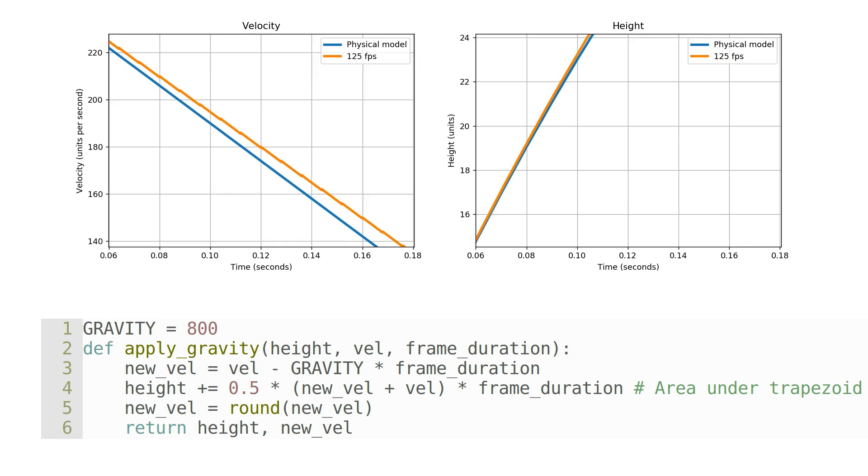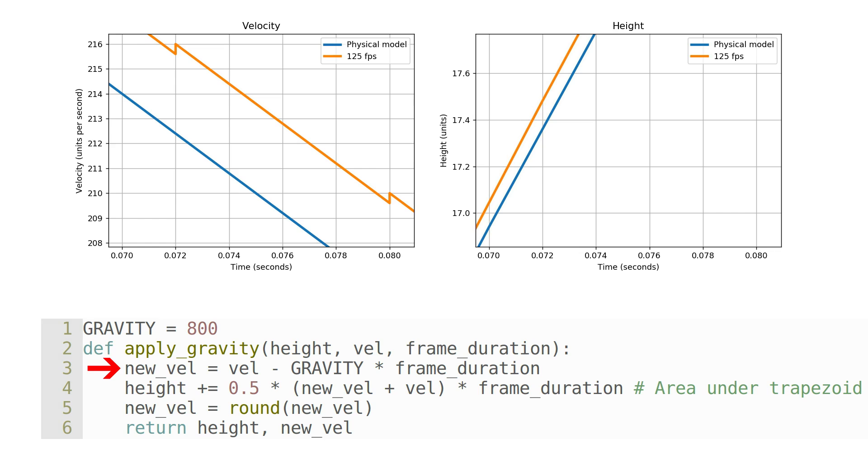So what's going on here? The key is on line 3. Note that because of the rounding from the previous frame, the input velocity will always be an integer. As such, if the frame duration multiplied by 800 has a fractional part that is less than 0.5, then the updated velocity will have a fractional part greater than 0.5, and so it will be rounded up on line 5.